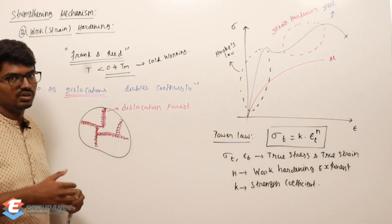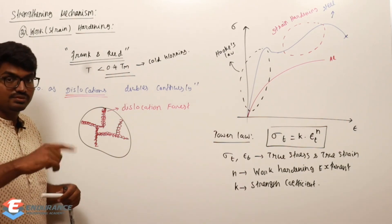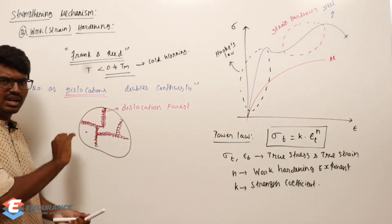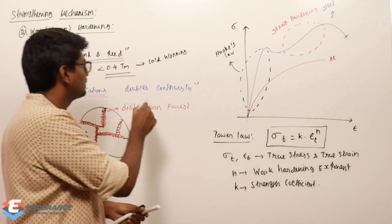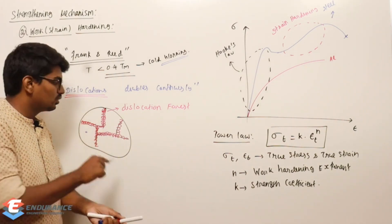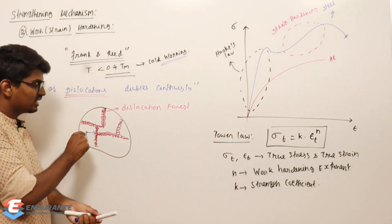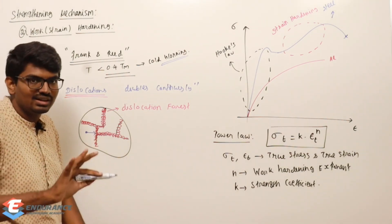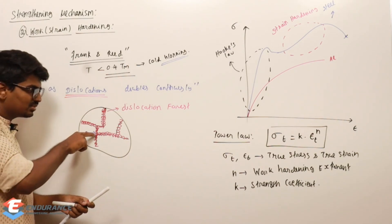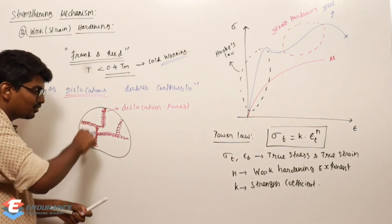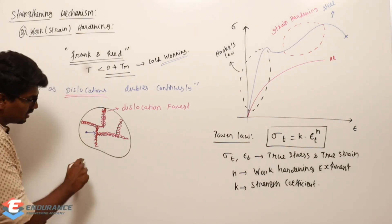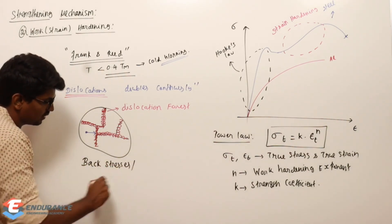As dislocations pile up near the grain boundaries, if we continue applying load — continuously cold working means continuously deforming — a moving dislocation within a grain will hit the dislocation forest. When it comes into contact with the dislocation forest, a back stress develops, which opposes the dislocation's motion. This back stress is also called residual stress.